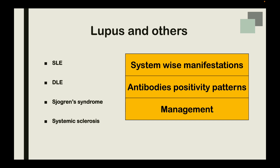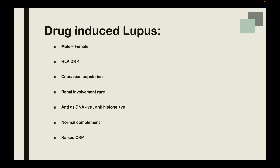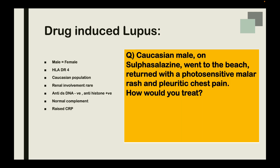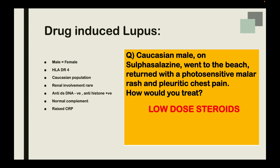Let's focus on lupus now. I always like to read SLE, DLE, Sjögren's, and systemic sclerosis together because they have a lot of overlap in system-wise manifestations, antibody positivity patterns, and management — you have to know this word for word. Focus specifically on drug-induced lupus and the differences between drug-induced lupus and SLE. For example, a Caucasian male on sulfasalazine who develops a photosensitive malar rash after going to the beach is drug-induced lupus — because SLE is more common in Black patients and females, and sulfasalazine is a known cause. The treatment option to look for is low-dose steroids.